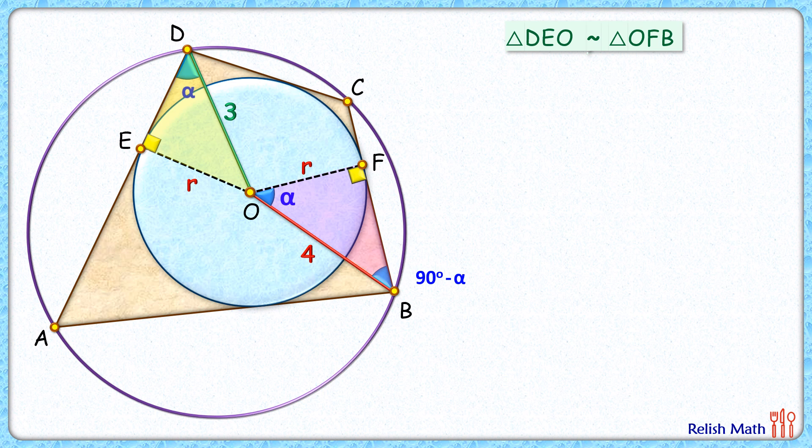As these triangles are similar, the ratio of corresponding sides will be equal. So here we get EO upon DO equal to FB upon OB. Here EO length is r, DO length is 3. So r by 3 equals FB.